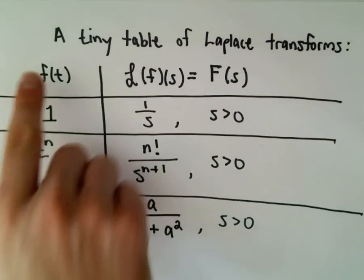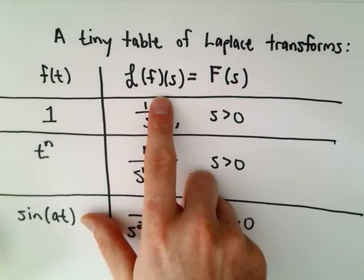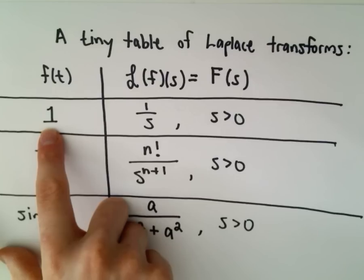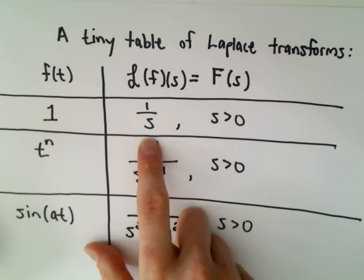So on the left, we have our function f of t, and then on the right, we have the Laplace transform associated with that. So the Laplace transform of the function 1 is just going to be 1 over s.